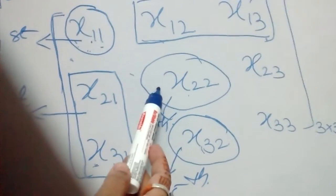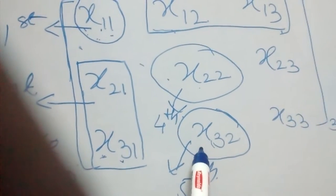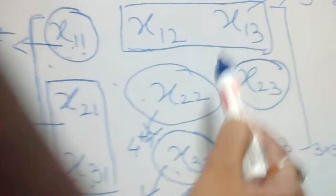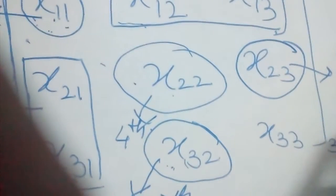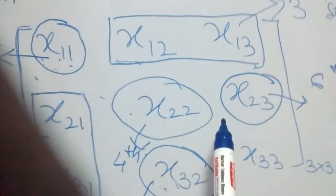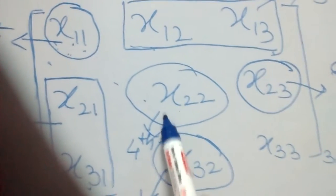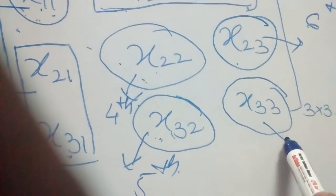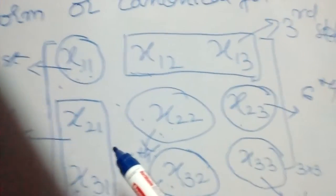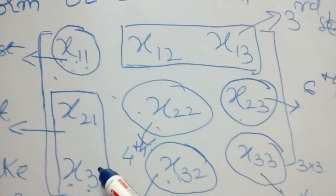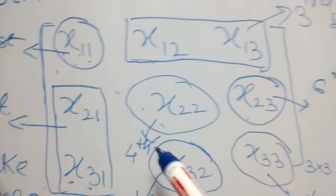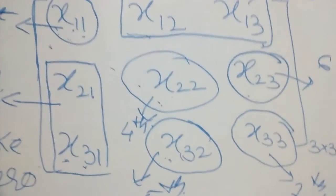We use R2 to make that element zero. Then the sixth step: make the corresponding element zero by using a column operation — applying C2 to make it zero. The seventh step: once it becomes zero, make the next diagonal element as 1. After reducing the matrix to normal form, count the number of non-zero rows to determine the rank of the matrix.